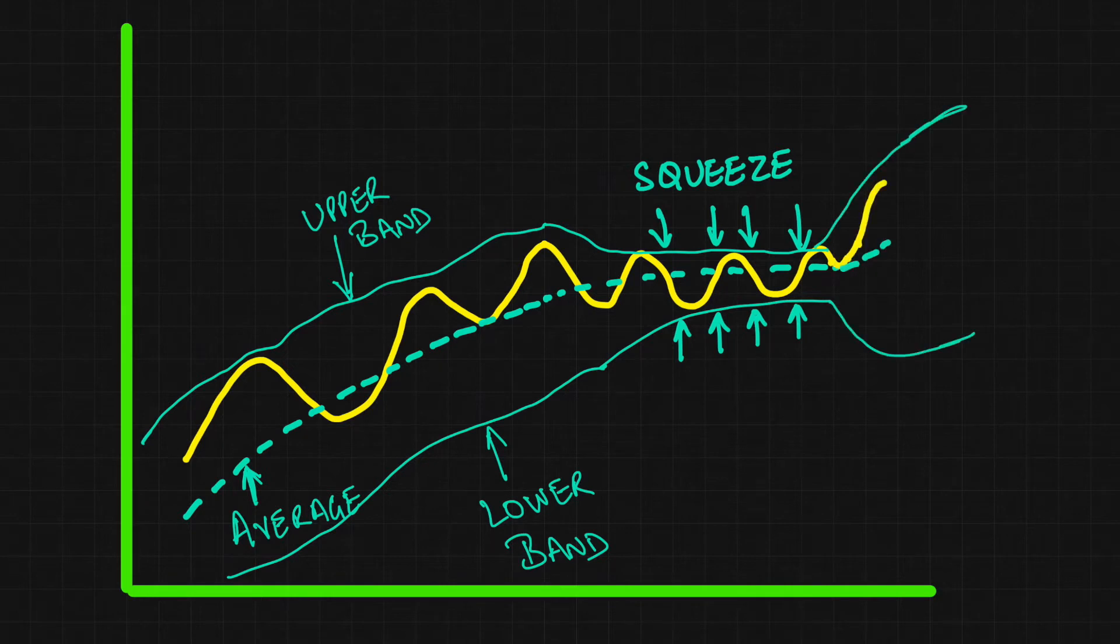And then once again when the market starts to grow and the price starts to expand, we will see that the upper and lower bands will also expand at the same time and they will move away from the moving average to cover the maximum amount of data as required by the standard deviation.